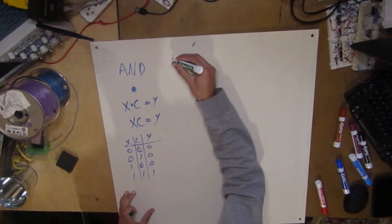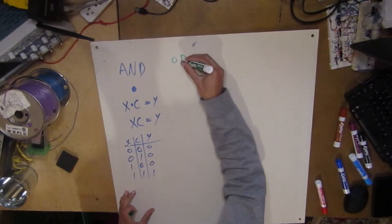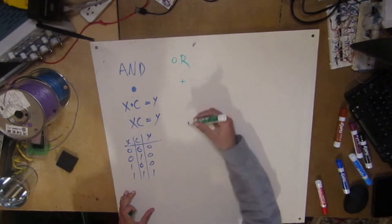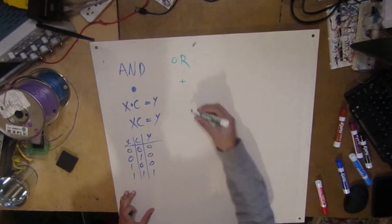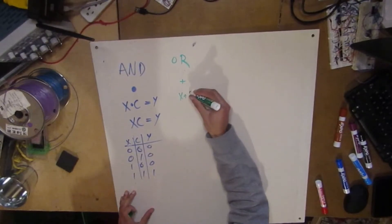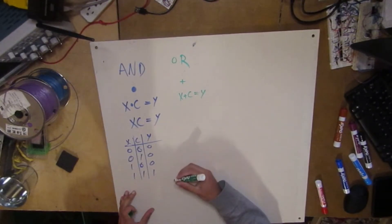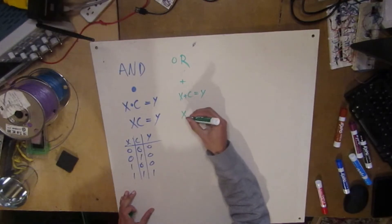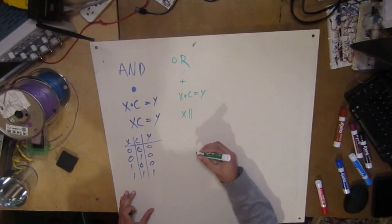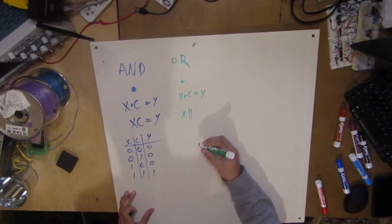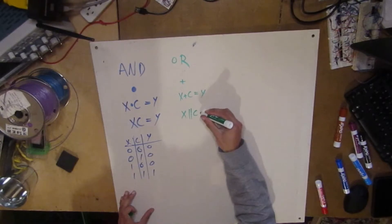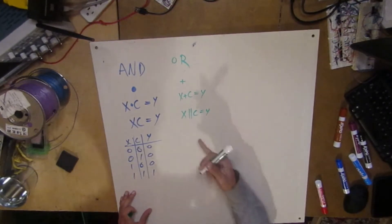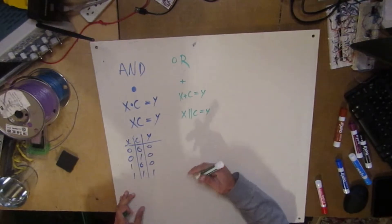Let's go to OR. So we're going to do OR. And in Boolean algebra, we give it the symbol plus. So you can have x plus c is equal to y. Or some people like to write it like x two-lines c equals y — I think you do this when you're doing programming, you use this notation.